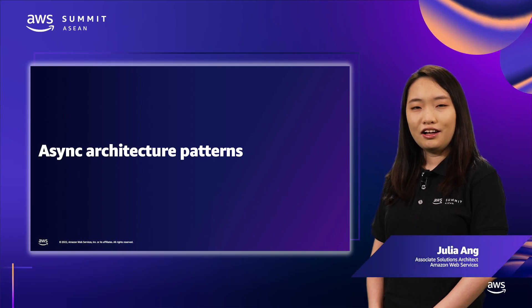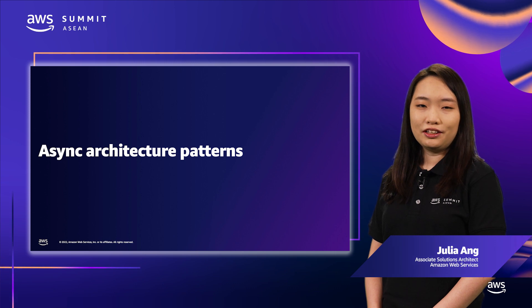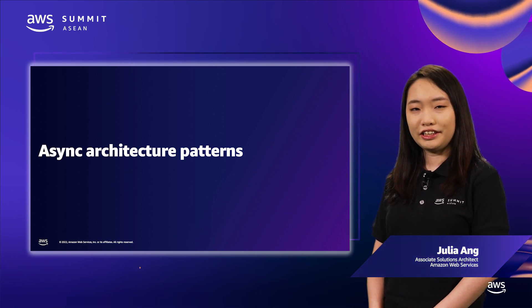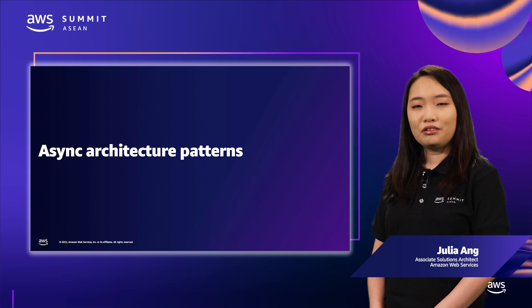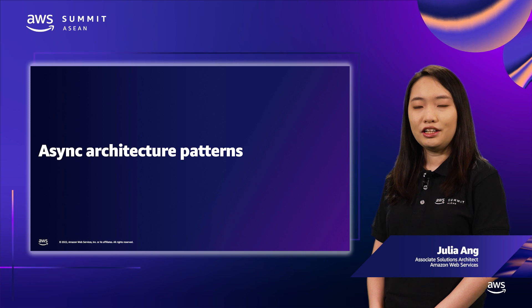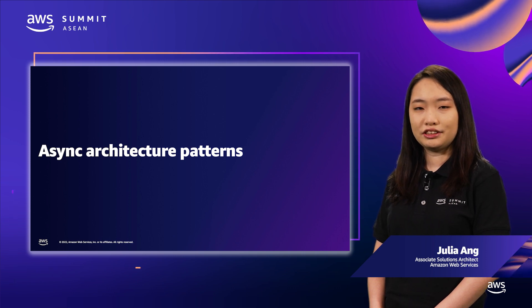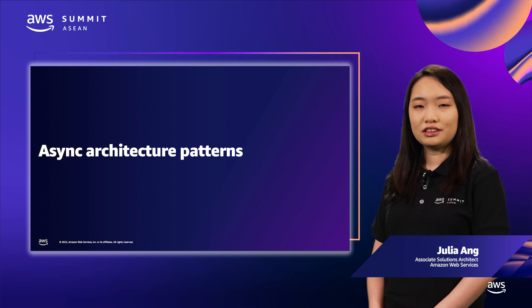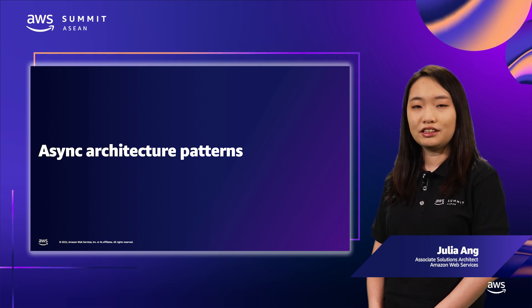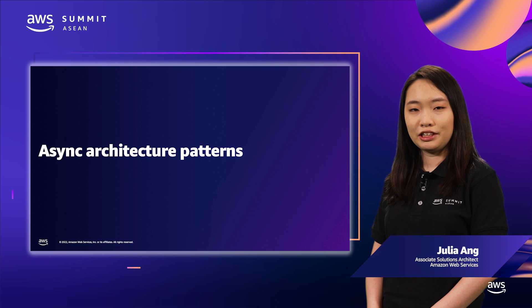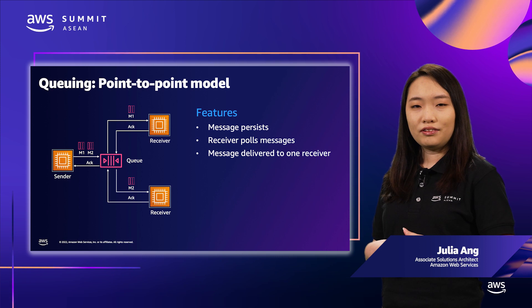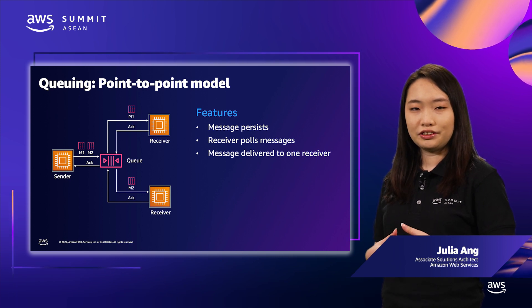Thank you, Aarti. Hi, everyone. I'm Julia, a solutions architect at AWS focused on digital native customers. I will take you through how you can architect microservices on AWS using asynchronous integration. For our discussion, we will use the terms messages and events interchangeably to represent data exchanged between microservices. The first pattern we'll look at is queuing.